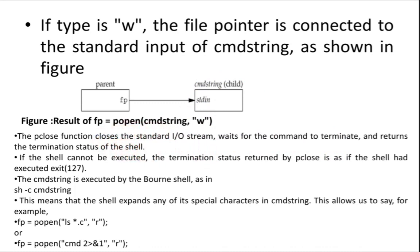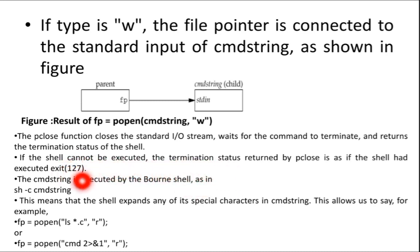If the shell cannot be executed, the termination status returned by pclose is as if the shell had executed exit with status 127. These are some examples of how in a Bourne shell the command string will be executed. The command is: sh -c command_string.